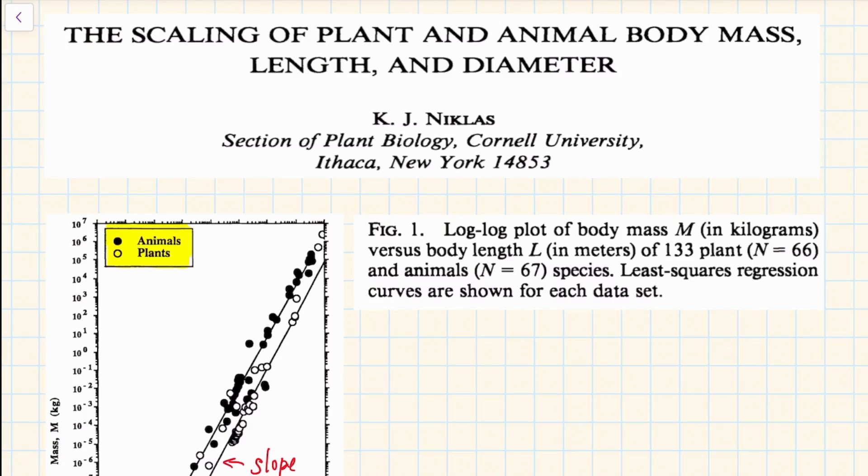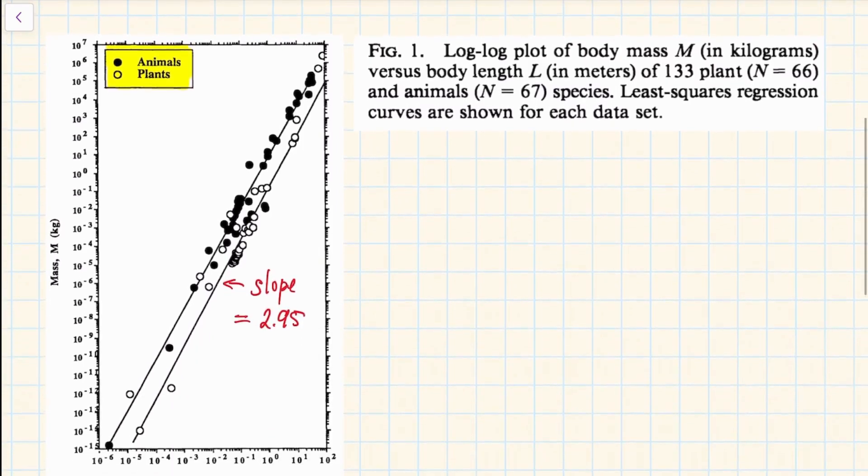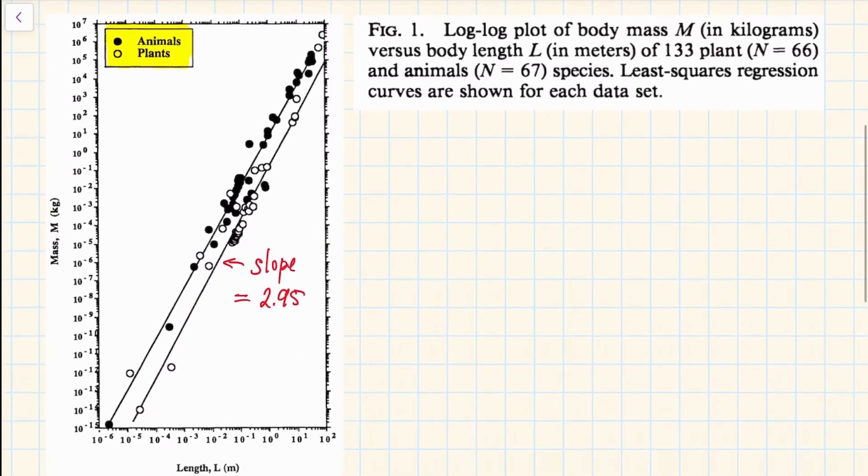In this video we will take a look at one example from this paper, the scaling of plant and animal body mass, length and diameter by Carl Niklas. If we take a look at this graph, it says here that this is a log-log plot of body mass in kilograms versus body length in meters of 66 plant species and 67 animal species.